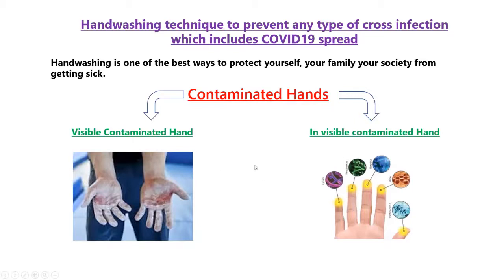For both these types we can use soap and water. Through soap and water we can remove contamination. For invisible contamination we can also use alcohol-based hand sanitizers, which are available in different types in the market. This alcohol-based sanitizer is also useful when we go outside — we can carry it with us, so that is the benefit of alcohol-based hand sanitizers. But soap and water is sometimes not available when we go outside.